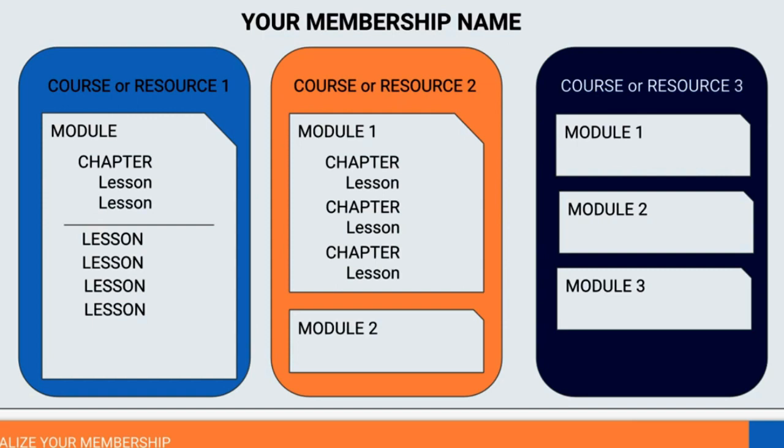The orange one shows a different way of seeing it. Within that course, you can see that there's a module with a breakdown of a chapter and a lesson, and in each of the chapters there would obviously be multiple lessons. Then there's module two — you can have multiple modules with multiple chapters and multiple lessons in each course. And then in course three, it's a resource with three modules, and inside of there you would have lessons.